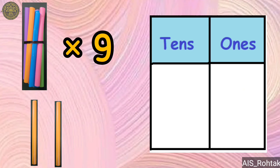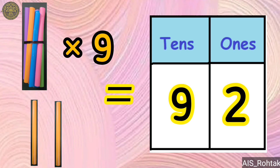Nine bundles and two loose sticks make the number 92 — nine under the tens column and two under the ones column.